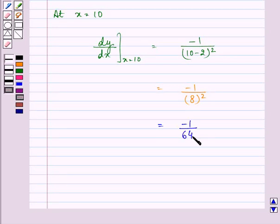So the slope, the required slope here is minus 1 upon 64.